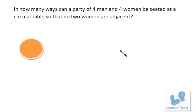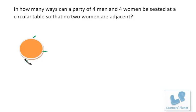Let's take this question: in how many ways can a party of four men and four women be seated at a circular table so that no two women are adjacent? First, we arrange the men. Four men can be arranged in 3! ways, as one person is fixed and the remaining three are arranged.